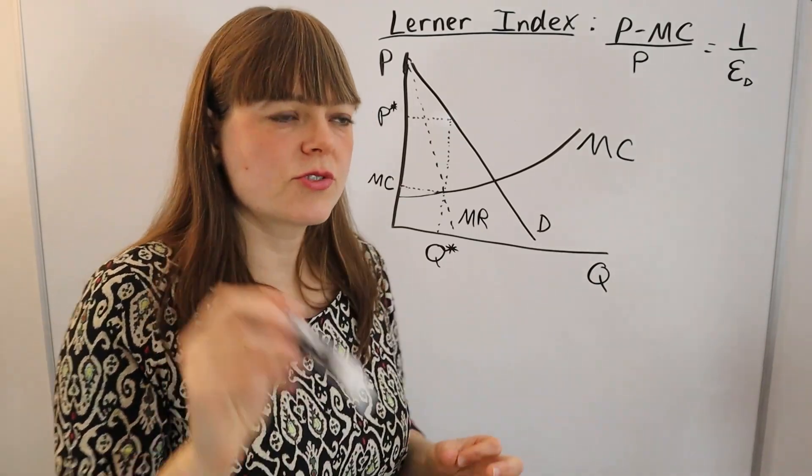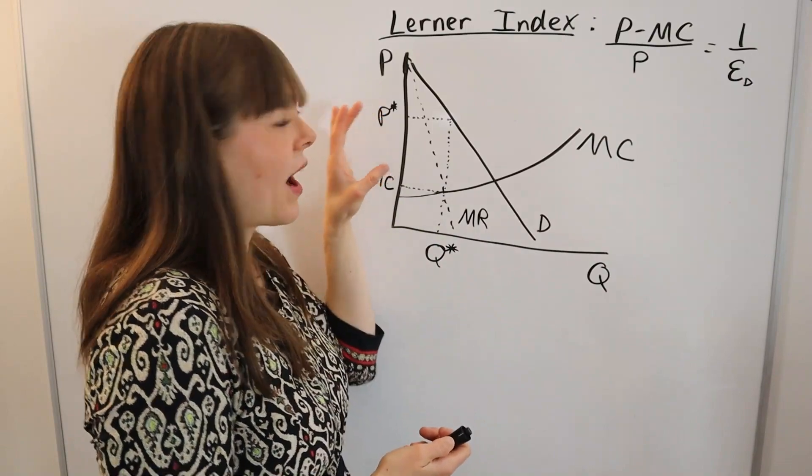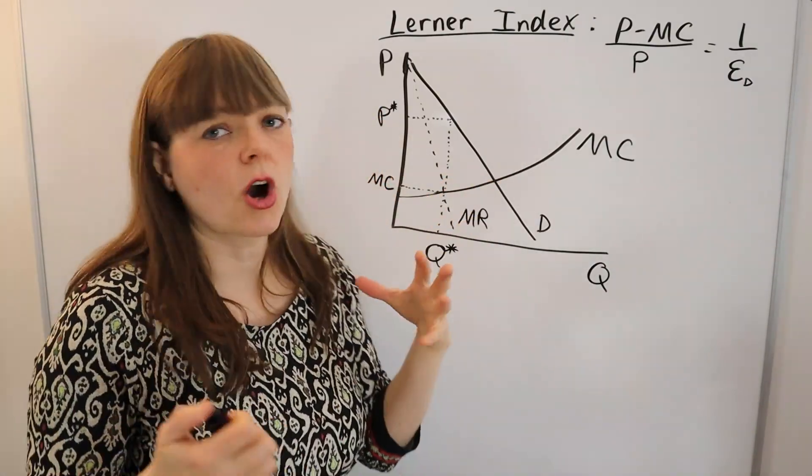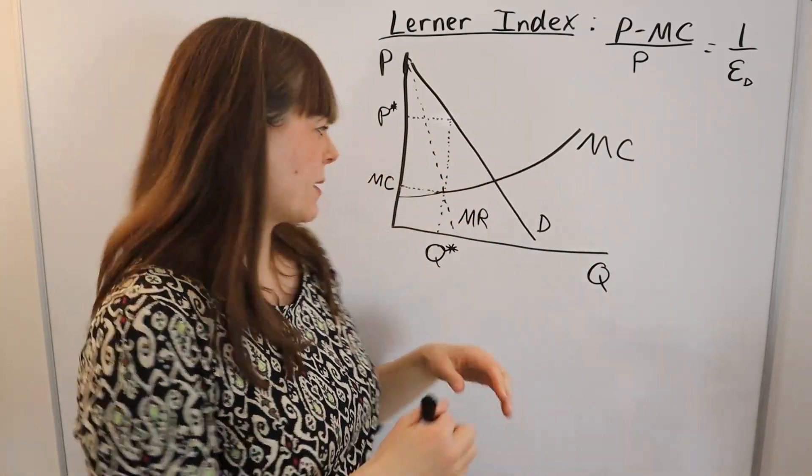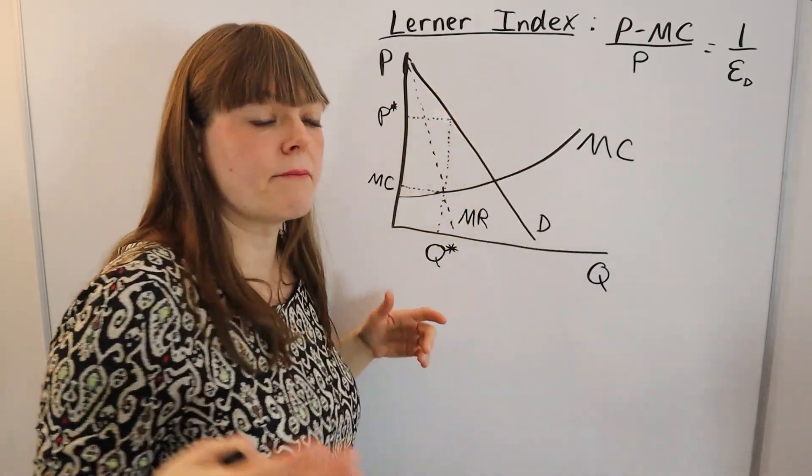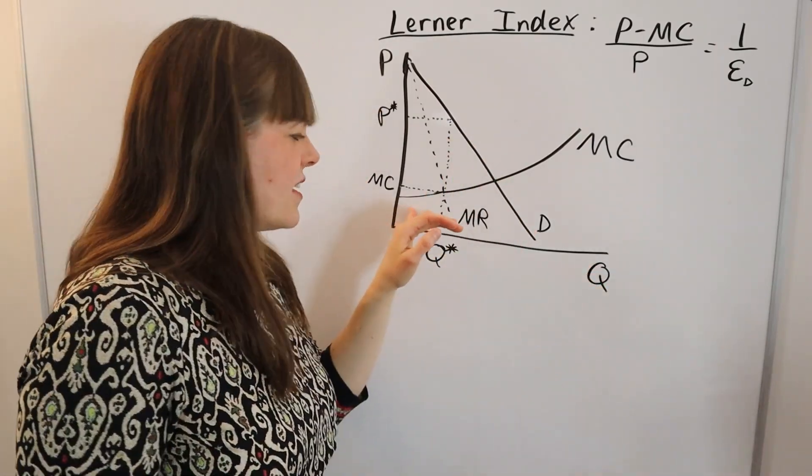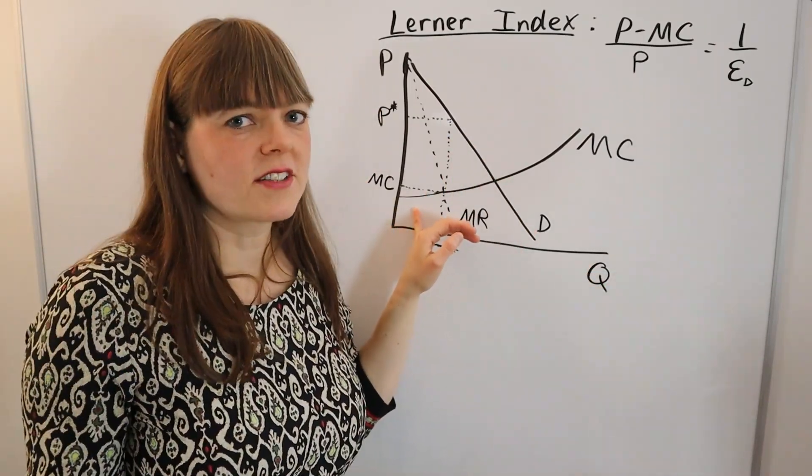However, you don't want to interpret a high Lerner Index as always being bad. For example, two-thirds of the price you're paying is markup above marginal cost. But marginal cost does not include the fixed costs of the product.